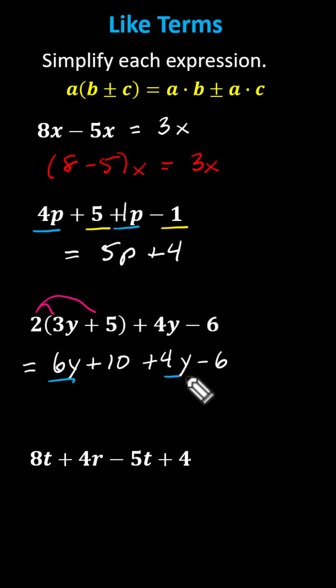6y and 4y are like terms, and again, so are the constants. Combining like terms, 6y plus 4y equals 10y, and 10 minus 6 equals 4, giving us plus 4. The given expression simplifies to 10y plus 4.